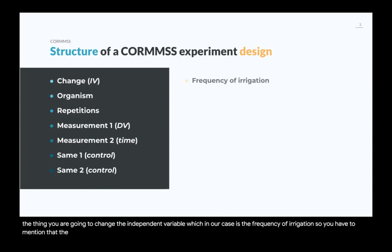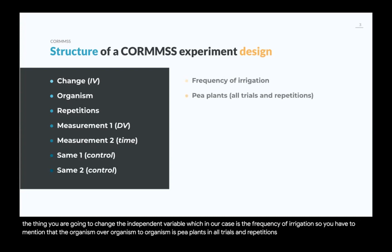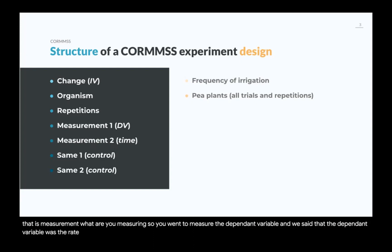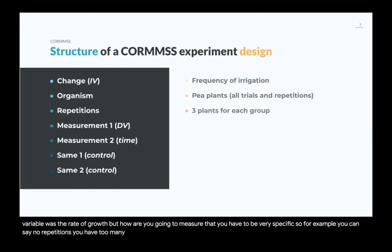O is for Organism — pea plants in all trials and repetitions. M is for Measurement — what are you measuring? You're going to measure the dependent variable, the rate of growth. But how are you going to measure that? You have to be very specific. And you also have to mention Repetitions.